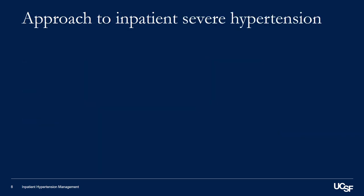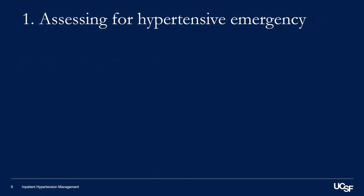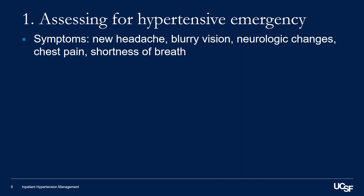In patients with severe hypertension in the inpatient setting, the first step is to assess for any symptoms. We're really assessing for any evidence of hypertensive emergency or evidence of end-organ damage. To do this, you should ask about any symptoms like new headache, blurry vision, neurologic changes, chest pain, or shortness of breath.